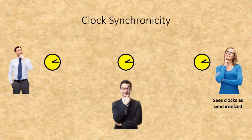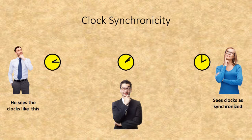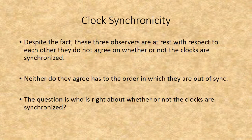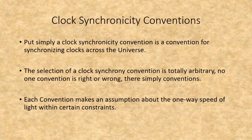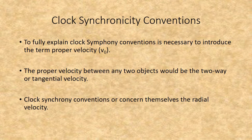If the guy on the left sees all three clocks as synchronized, then the guy in the center will see both other clocks behind his, with the one on the right behind the one on the left. The woman on the right sees all three out of sync with the other two behind hers. Despite being at rest with respect to each other, these three observers do not agree on whether the clocks are synchronized, nor on the order in which they are out of sync. A clock-synchrony convention is simply a convention for synchronizing clocks across the universe — totally arbitrary, with no one convention being right or wrong.